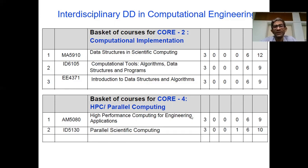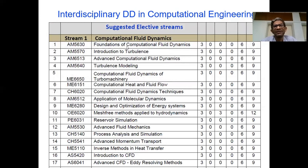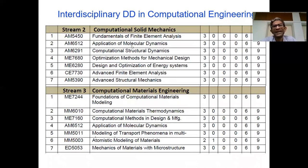One can look into the details. The core three basket is coming from discretization methods — we suggest a finite element, finite volume, or a traditional spectral elements kind of course. Under computational fluid dynamics, one can choose three different electives such as foundations of CFD, and along with that also turbulence and turbulence modeling, if you want to specialize in fluid dynamics. Or if you want to specialize in computational material science, you can choose three distinct courses from either computational material science or computational solid mechanics. These are only representative, and there is no hard and fast rule that you must stick to a particular stream.